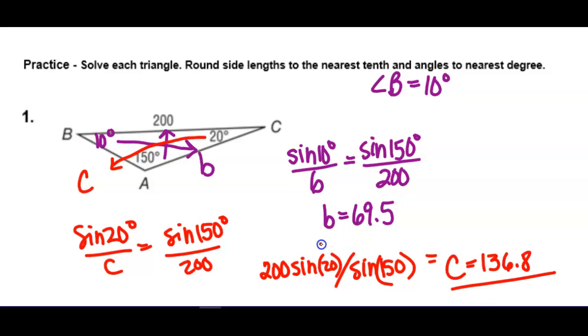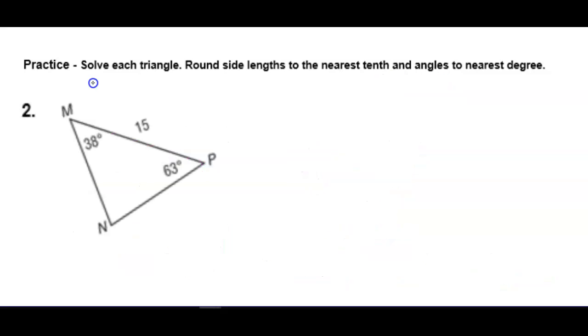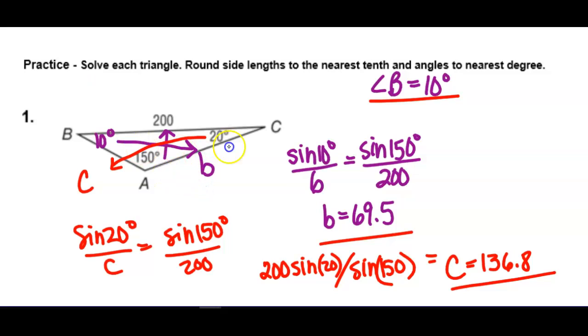And then finally, I'm going to do it over again, and I'm going to say c is the side over here that's across from a 20. And again, I'm typing 200 times the sine of 20, close parenthesis, divided by the sine of 150 to get c. So I have c is 136.8. So I have side c, side b, and angle b that we're missing to begin with.